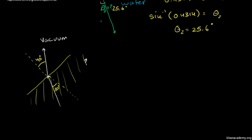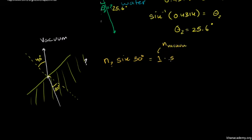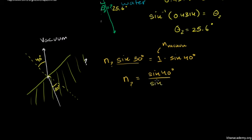Let's figure out the refraction index first. The refraction index for this unknown material times the sine of 30 degrees is going to be equal to the refraction index for a vacuum — which is 1 — times the sine of 40 degrees. To solve for the unknown refraction index, we divide both sides by sine of 30 degrees. So the unknown refraction index equals sine of 40 degrees over sine of 30 degrees, which equals 1.29.